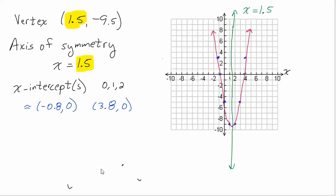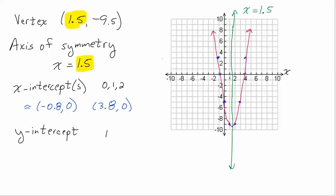The next thing are y-intercepts. The y-intercept is where the graph touches the y-axis. You're only going to have one y-intercept in any parabola — it always has one y-intercept. Ours, where it touches the y-axis, is over zero, down five. That's our y-intercept.